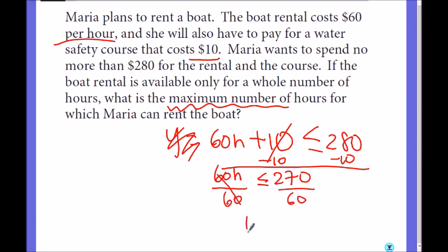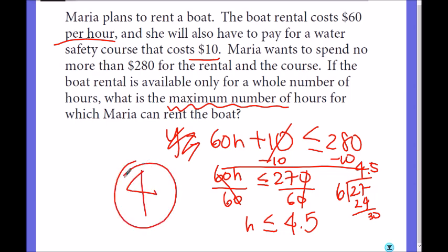Hour can be less than or equal to 4.5. Can it be 5? 5 times 60 is 300. 270 divided by 60 is 4.5. So can he rent 5 hours? No, it has to be less than 4.5. So the maximum hour that he can rent is 4 hours. It can be 3 hours, but we are looking for the maximum number of hours.